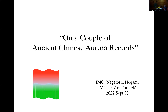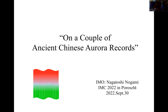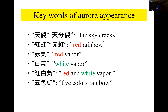My presentation relates to ancient Chinese records. So far I have introduced some records about meteorites or comets, but this time I come to the aurora record. This record is not only about aurora itself, but I also mention the possibility of records being about comets.